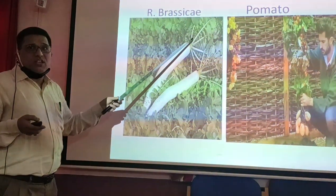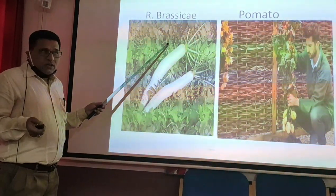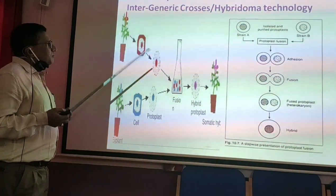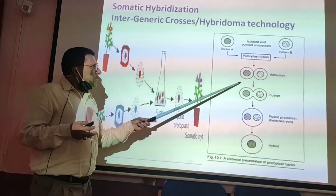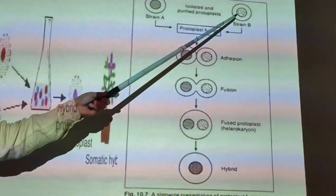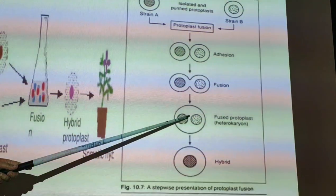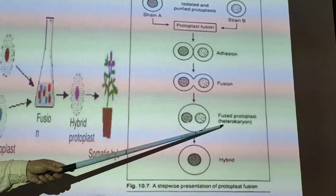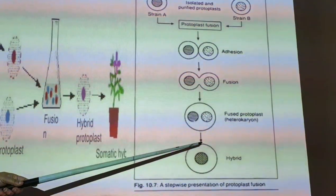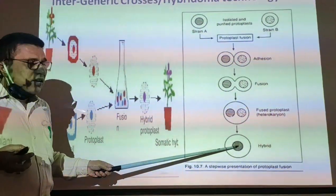Two vegetables can be obtained from one plant. This is the technology which has been adopted. In this schematic representation I have shown how the protoplasts of two different cells are fused to one another to produce a hybridoma cell, which is also called a heterocaryon, and after the heterocaryon cell is obtained, this cell will be grown into a complete plant via tissue culture technology.